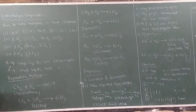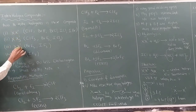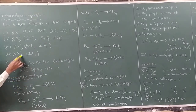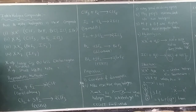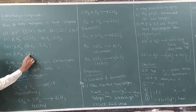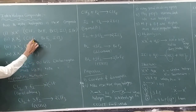X refers to the halogen which is less electronegative and has a larger atomic size — this is the central atom. X' represents the surrounding atoms in XX'3, XX'5, and XX'7, where there are one, three, five, or seven surrounding atoms respectively. The surrounding atoms are small in size and more electronegative. Small size allows more atoms to be accommodated around the central atom.